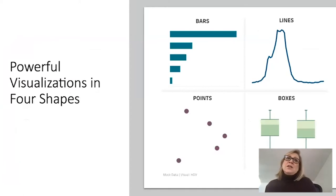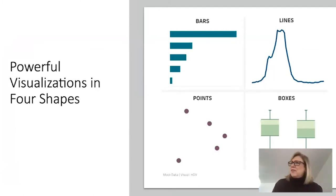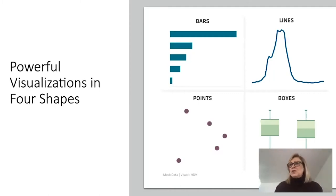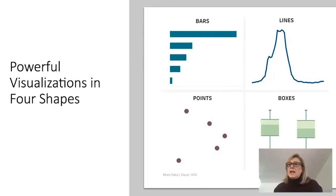There are four shapes you can use alone or in combination to create really beautiful and powerful data visualizations: bars — oriented vertically or horizontally; lines; points; and boxes — also oriented vertically or horizontally. In this section we'll run through different ways to use these shapes alone and in combination, including some do's and don'ts.